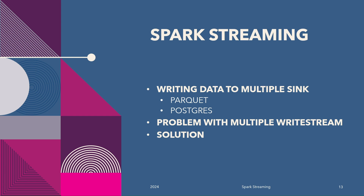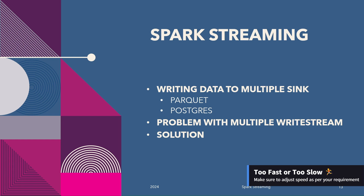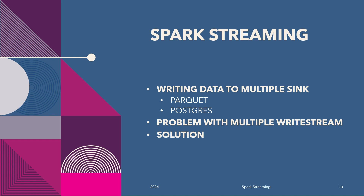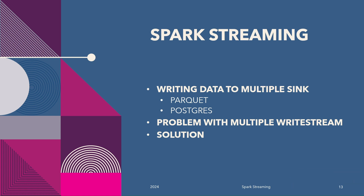Hello and welcome back. Till today, we have processed our Spark Streaming data and written it to only one sink. Today, we will see how to write data to multiple sinks. The use case will still remain the same. We will read JSON data from Kafka using Spark Streaming, flatten and explode the data, and write the same data to multiple sinks. In this case, it will be Parquet and PostgreSQL database.